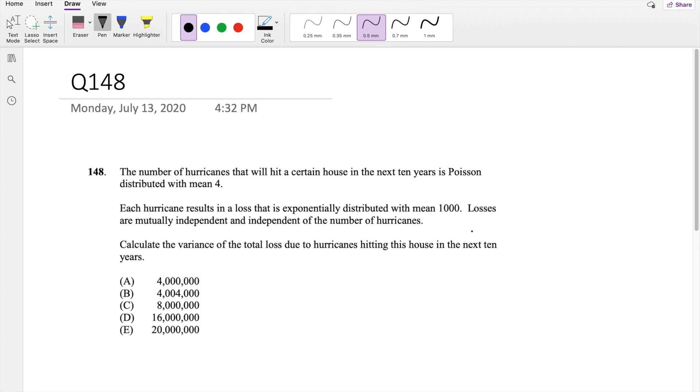So this question is a multi-step. Let's just read it line by line. The first line says the number of hurricanes that hit a certain house in the next 10 years is Poisson distributed with a mean of 4. So I'm going to denote X as the number of hurricanes that hit. And this we know is Poisson distributed with mean equal to 4.